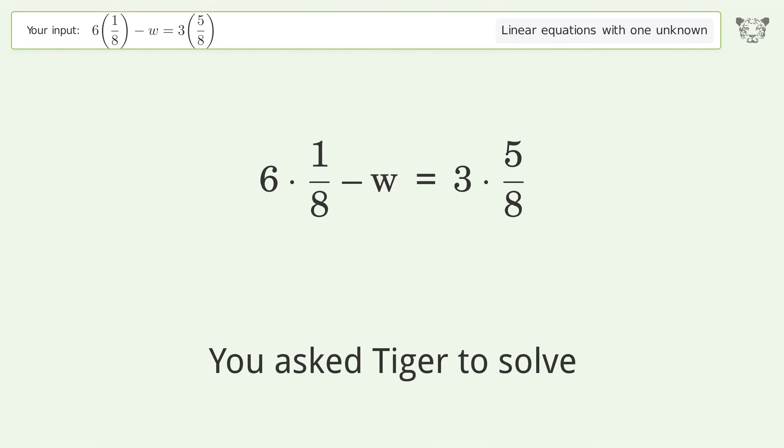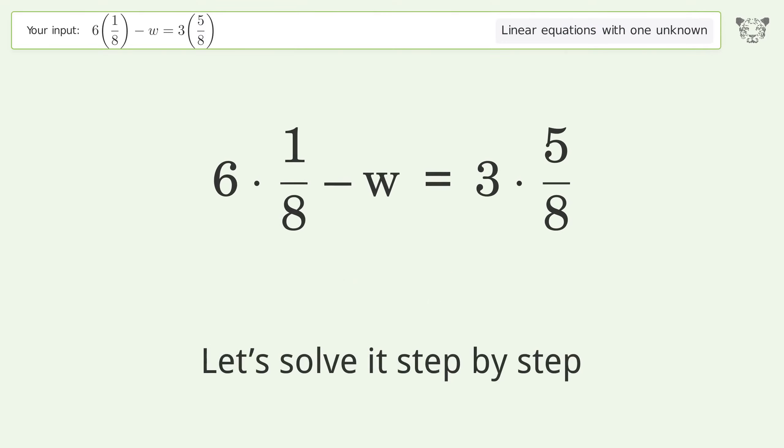You asked Tiger to solve this. This deals with linear equations with one unknown. The final result is w equals negative 9 over 8. Let's solve it step by step.